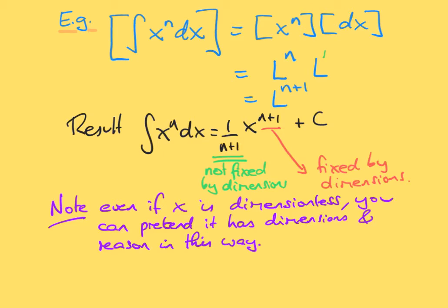Dimensional analysis does not give us everything — it does not explain why there is a 1/(n+1) factor. To calculate this integral you add 1 to the power and divide by the new power. Also, even if x is dimensionless, you can pretend it has dimensions, and if it were to have dimensions you would have to have x to the n+1 in the result. That's a nice way of thinking about it.